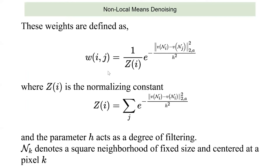These weights are defined by a distribution where zi is the normalization constant. You want to compute — the farther away a particular pixel is from the one you want to denoise, the smaller the weight you want to give it. This is the parameter that you end up tuning; it acts as a degree of filtering, and that is the variance.